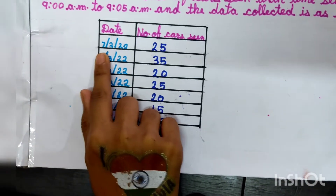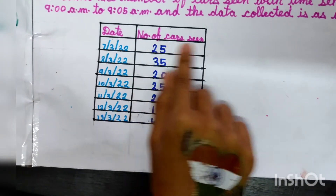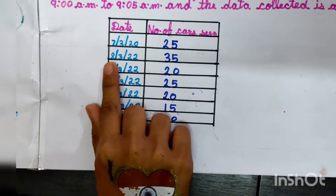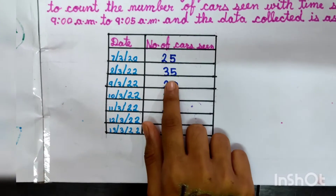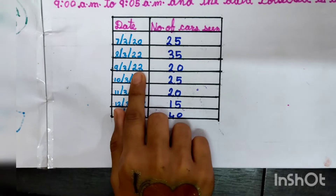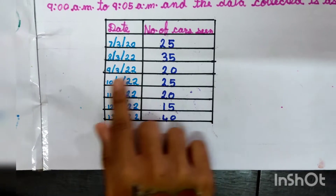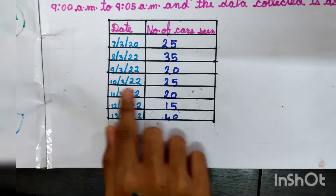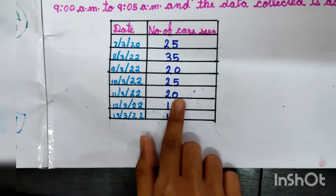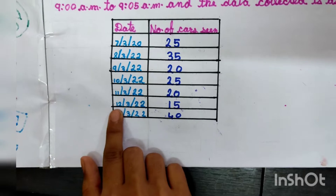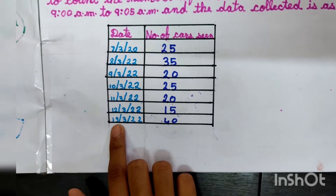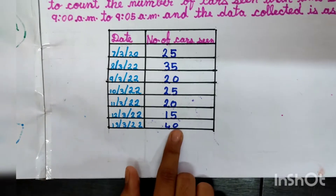7 March 2022: 25 cars. 8 March 2022: 35 cars. 9 March 2022: 20 cars. 10 March 2022: 25 cars. 11 March 2022: 20 cars. 12 March 2022: 15 cars. 13 March 2022: 40 cars.